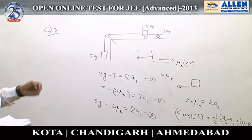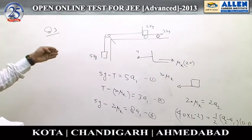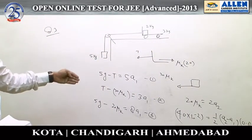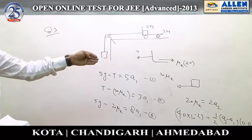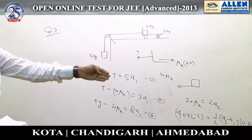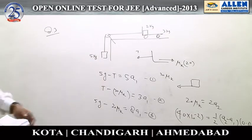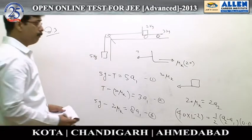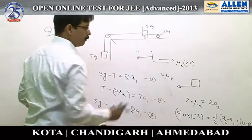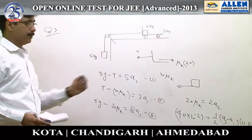When you substitute the expressions for A1 and A2 into the relative acceleration expression, you get the value of μk from this equation.